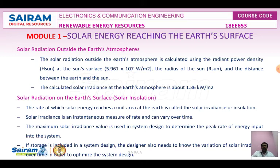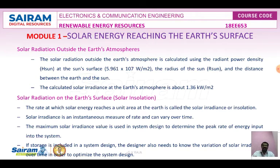Solar radiation on the Earth's surface: the rate at which solar energy reaches a unit area at the Earth's surface is called solar irradiance, or solar insolation. Insolation means the Sun's energy received over a horizontal surface. The unit of measure of irradiance is watts per square meter. Solar insolation is an instantaneous measure of rate that can vary over time.